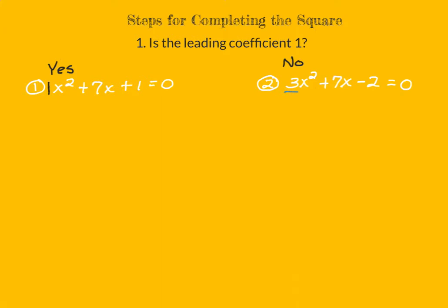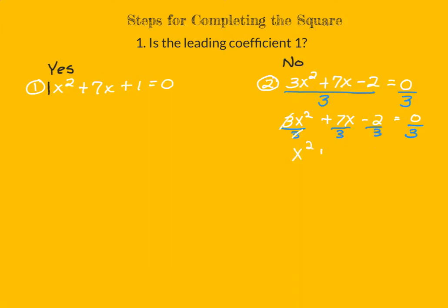What we're going to do is divide both sides by the leading coefficient. That's the same as dividing each term — the 3x squared, the 7x, the minus 2, and the 0 — all by 3. So our first term becomes x squared, our second term becomes 7 thirds x, and then we have minus 2 thirds equals 0. Now we do have a leading coefficient of 1.